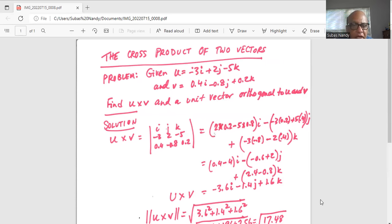And for k it will be minus 3 times 0.8 which will be positive 2.4 minus 2 times 0.4. 2 times 0.4 is 0.8.